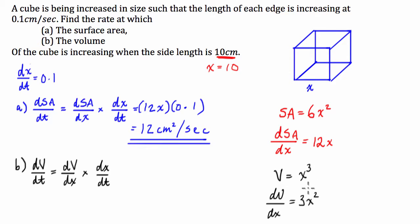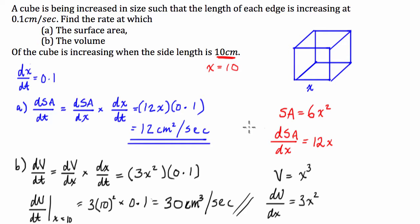Cool so what we can do then is we can substitute this in. We have our dV/dx is 3x squared. We know our dx/dt is 0.1 from the question and what we're going to do is evaluate dV/dt when x equals 10. So that's going to be equal to 3 times 10 squared times 0.1. So 3 times 100 is 300 times 0.1 is 30 centimeters cubed per second. Cool so those are our two solutions for part a and part b of this question.